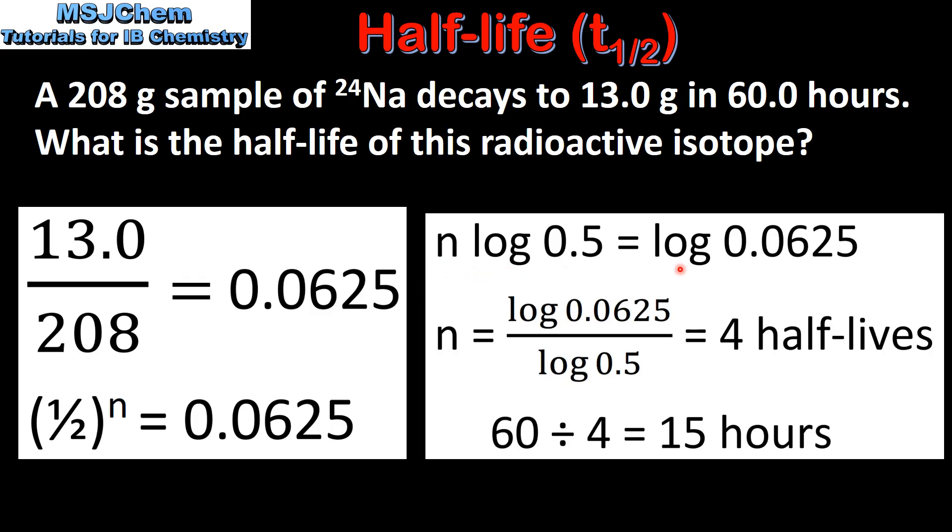Next we take the log of both sides and we solve for n by dividing the log of 0.0625 by the log of 0.5 which gives us 4 half-lives. We then divide the total number of hours which was 60 by 4 which gives us a half-life of 15 hours.